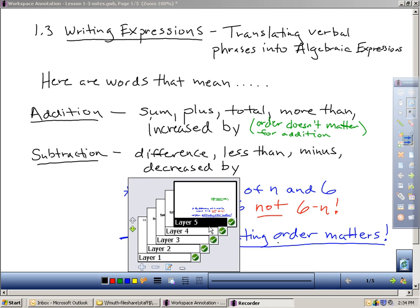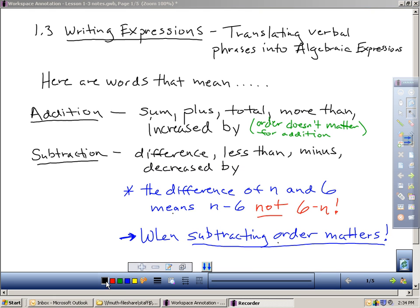For example, the difference of n and 6. When you hear difference, difference means subtracting. The difference of n and 6 means n minus 6. It does not mean 6 minus n. When you subtract, the order matters. Let me just pick something easy that I know you would get. Let's take something simple like 5 minus 2. I completely know that you all know what 5 minus 2 is. You all know it's 3. But if I switch the order around and put 2 minus 5, do I get the same thing? No, it isn't the same. You get negative 3. The order when you subtract matters.